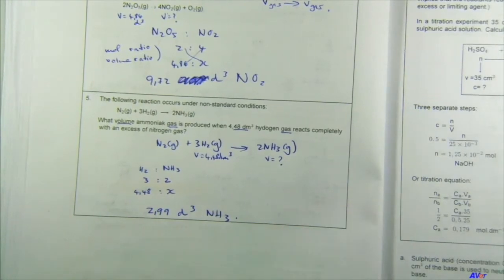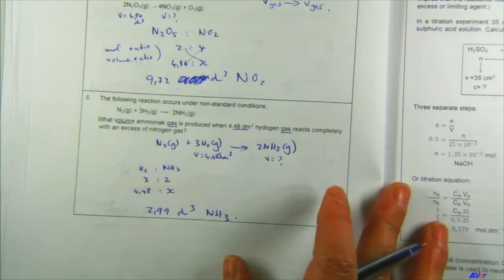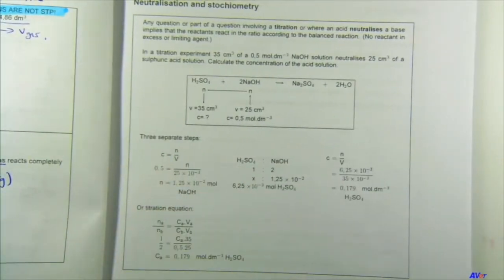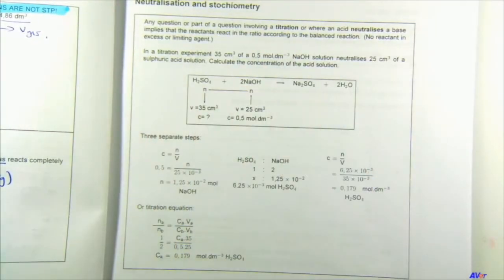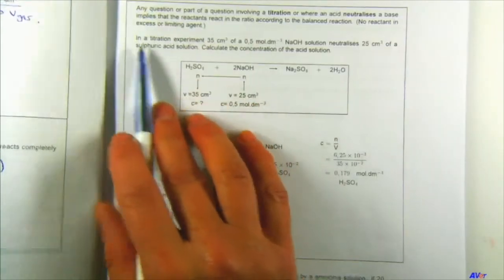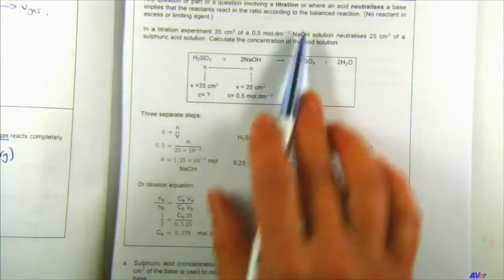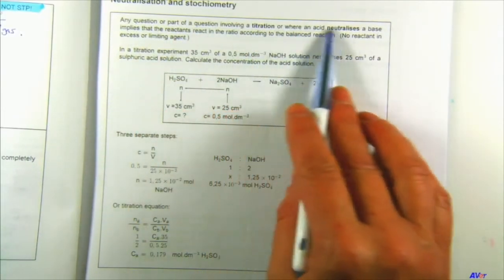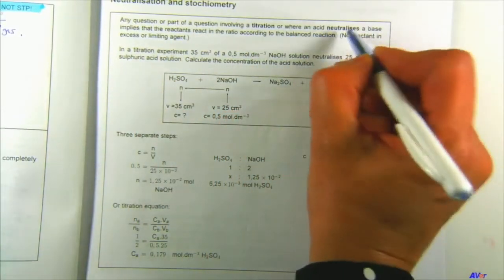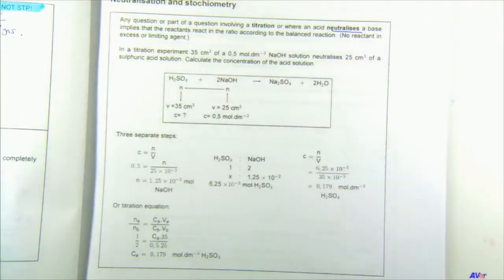Remember this exception because examiners ask it — if there's an exception it's a reason to test it, as it makes things a bit more difficult. Moving on: yesterday when we did acids and bases I said we wouldn't do titration calculations yet, but today we're going to look at neutralization and titration calculations.